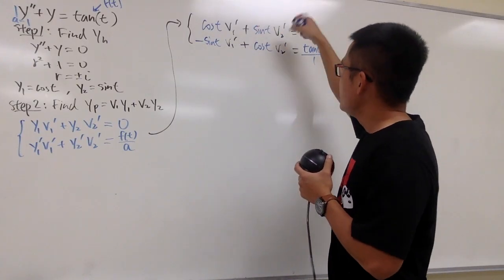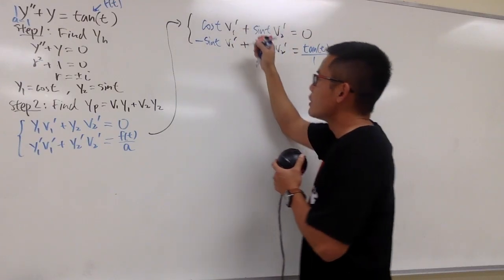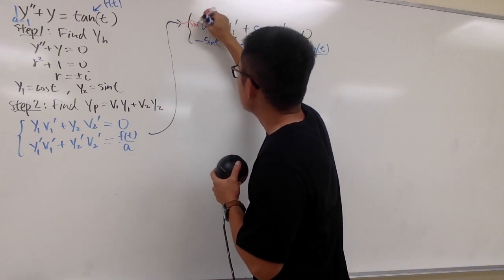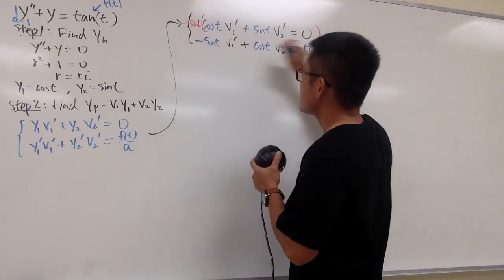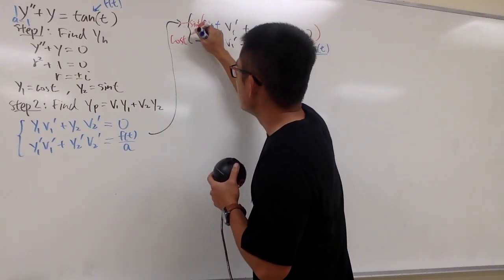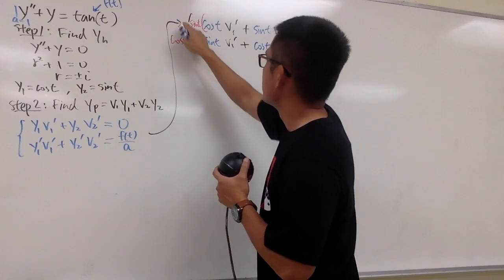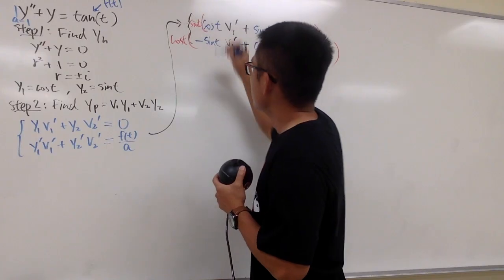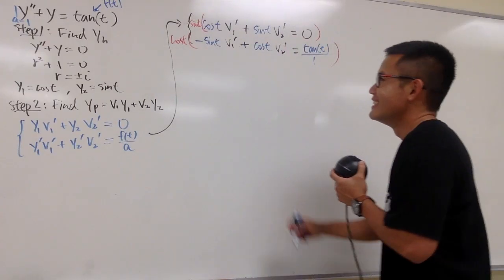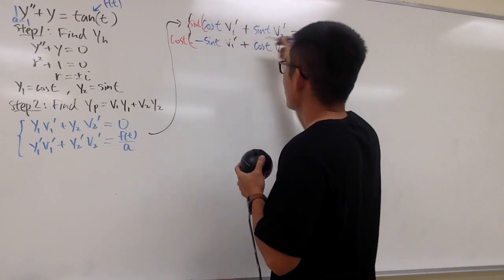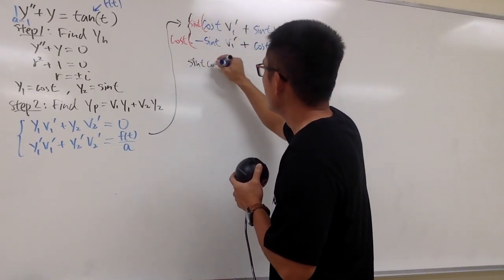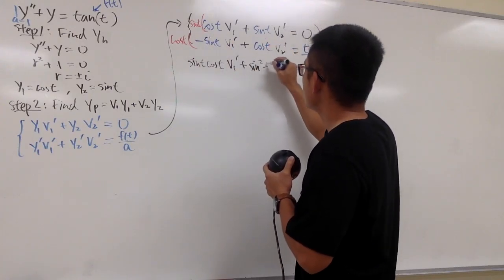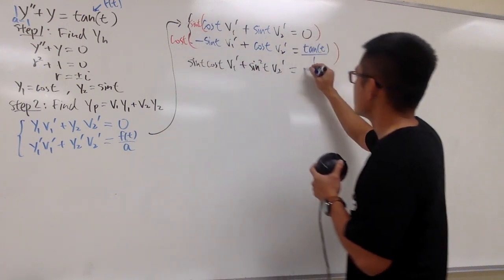Let me solve for φ2' first, so I want to get rid of φ1'. I'll multiply the top equation by sine t and the second equation by cosine t. This gives: sine t · cosine t · φ1' plus sine squared t · φ2' equals zero; and negative sine t · cosine t · φ1' plus cosine squared t · φ2' equals cosine t times tangent t.